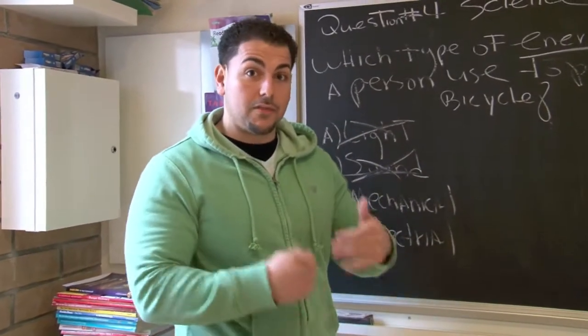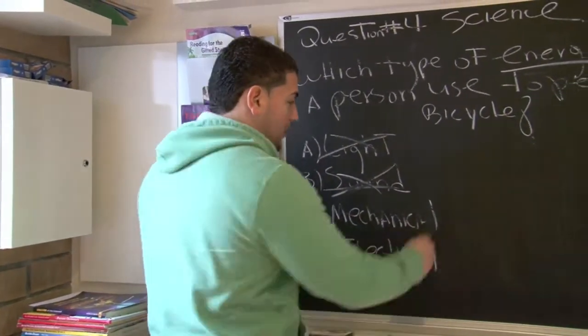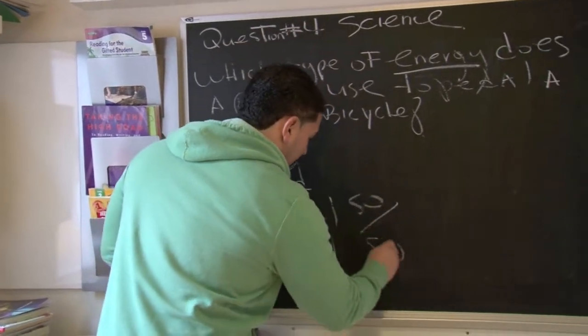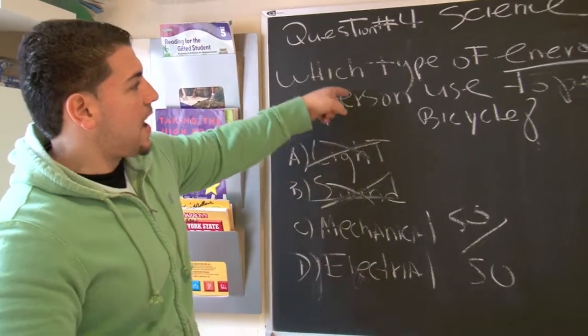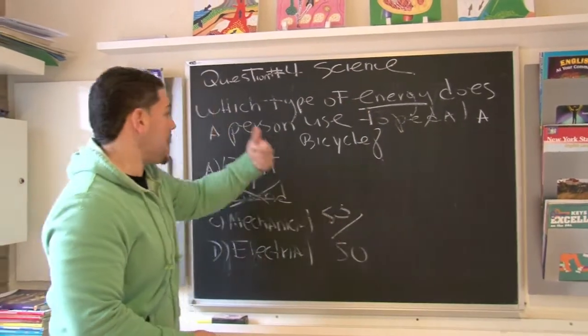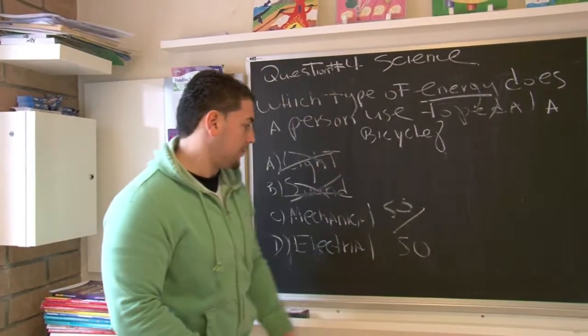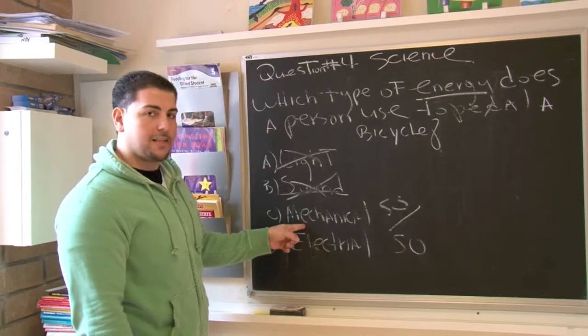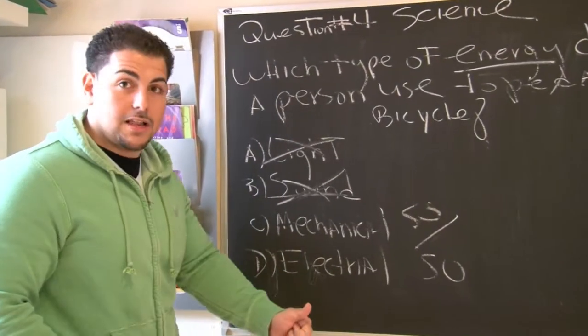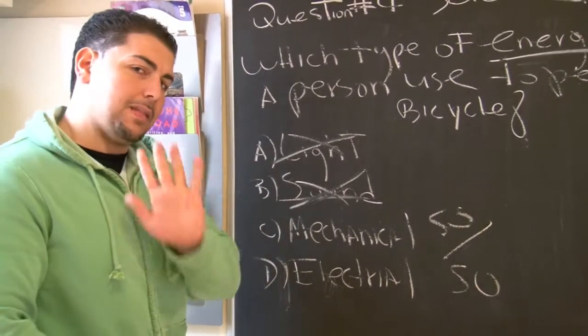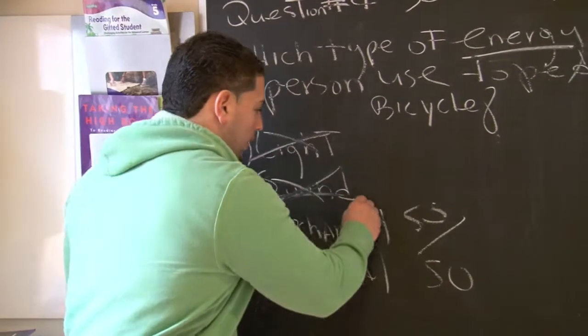You know, Mr. Sansomino loves the 50-50 odds. So it's 50-50 right now. Mechanical. Let's think about it again. Which type of energy does a person use to pedal a bicycle? Well, I'm telling you right now that I like the word mechanical because when we get on that bicycle, we need to use mechanical energy to make the bike go. But let's not be too hasty. We'll put a question mark there.